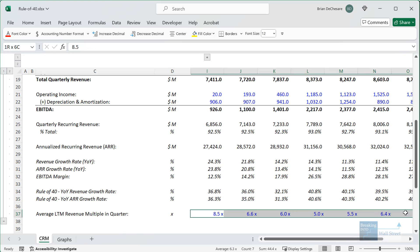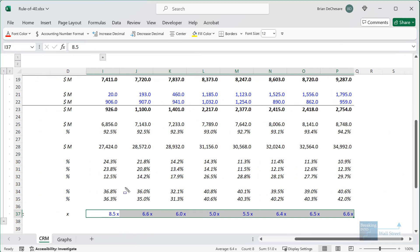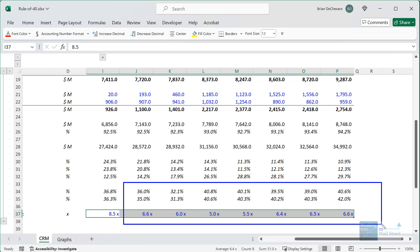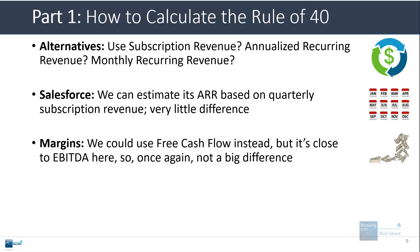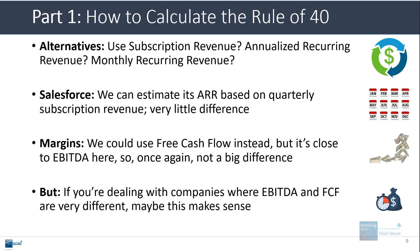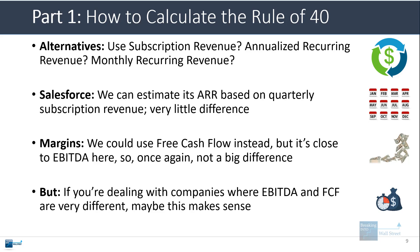I've also plotted the company's average revenue multiple in each quarter below this, and unsurprisingly the rule of 40 was about the same for this company over this timeframe, always in this range of about 5 to 7x revenue. With EBITDA, you could use free cash flow instead or unlevered free cash flow, but in this case it's actually quite close to Salesforce's EBITDA. The ARR method would make more sense if you were dealing with a high-growth startup whose numbers were changing a lot from quarter to quarter, but for a company this mature it just doesn't matter.